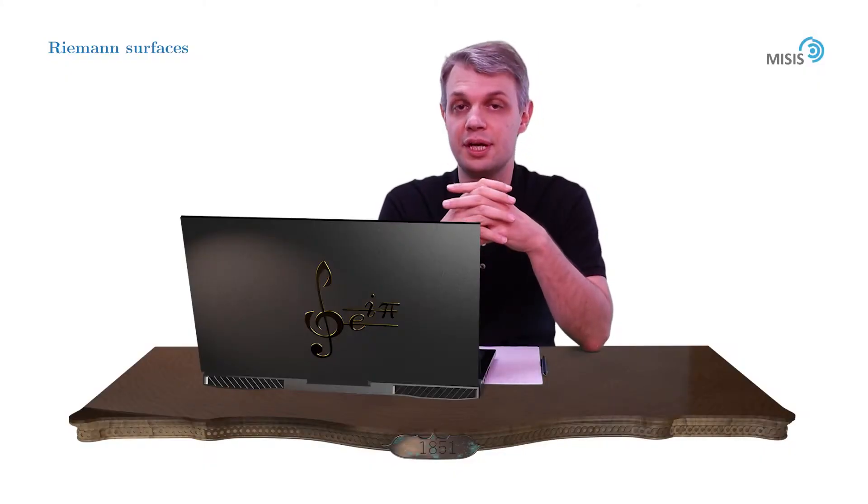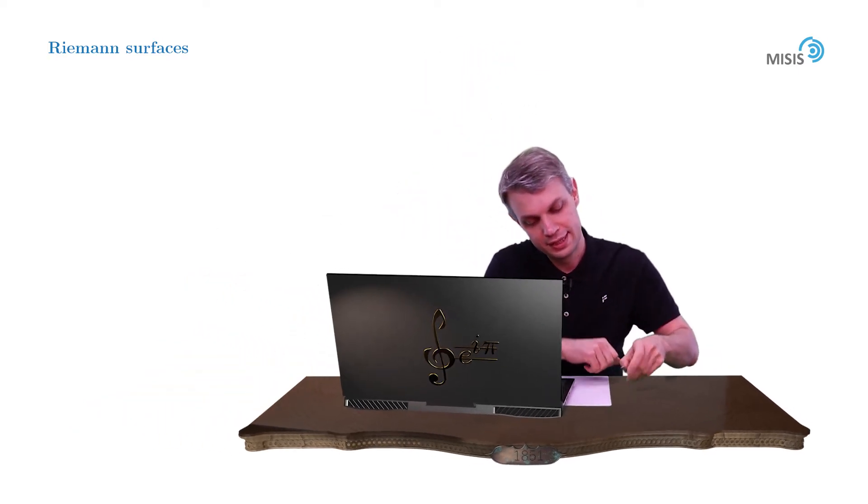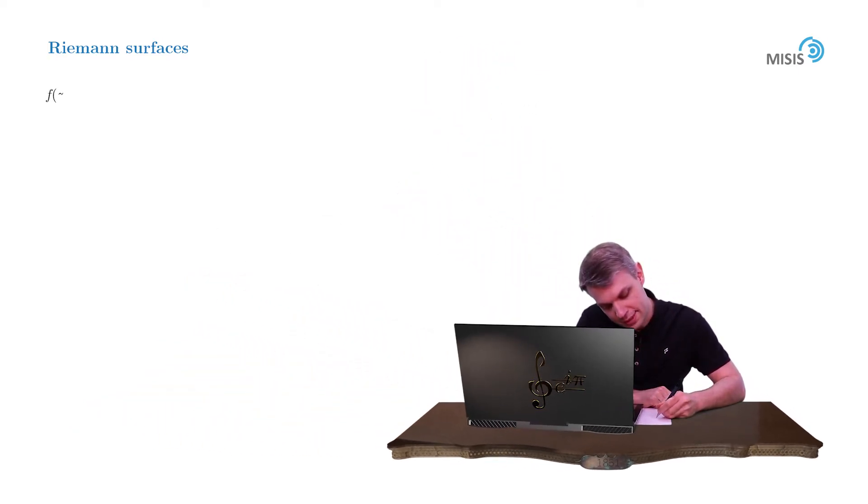In this section we will consider a more interesting example of a Riemann surface of the function f equals square root of 1 minus z squared, with the branch specified by the condition that f is equal to i times square root of 3.